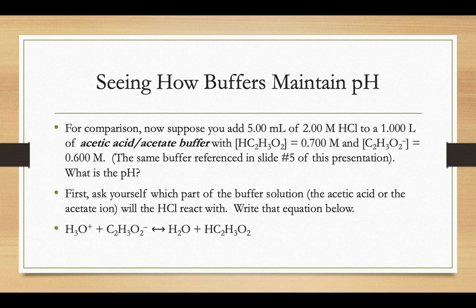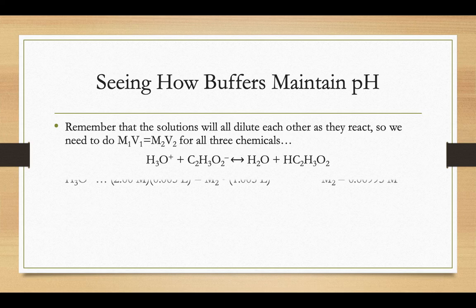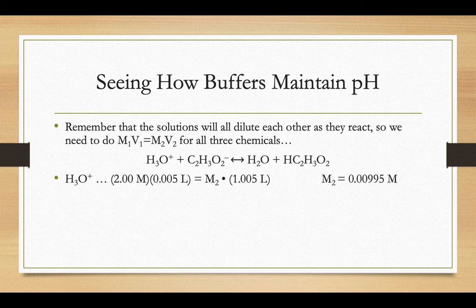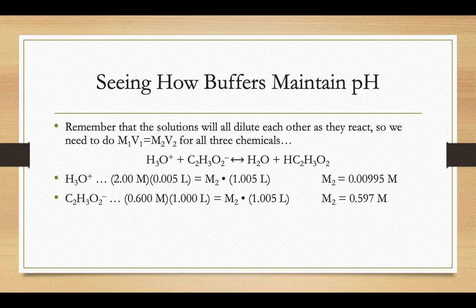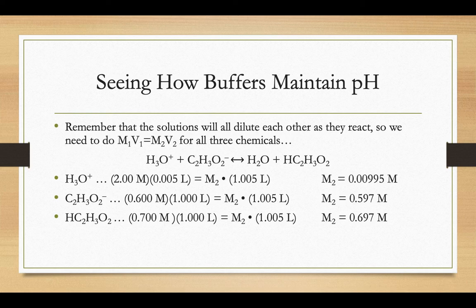When we add that hydrochloric acid to our acetic acid-acetate buffer solution, we have to keep in mind all the chemicals dilute one another. So we have to do M1V1 equals M2V2 for all three chemicals: the H3O plus, the acetate ion, and the acetic acid. So the H3O plus started as two molar, we put in five milliliters, 0.005 liters, into our one liter's worth of buffer. So our new volume for the buffer with the acid in there is 1.005 liters. We have our new molarity. We're going to do the same thing with the acetate ion that started as 0.6, but after we add that little splash of acid in there, it brings the molarity down to 0.597. And our acetic acid started with a molarity of 0.7. After we add that splash of acid, it brings down the molarity just a hair to 0.697.